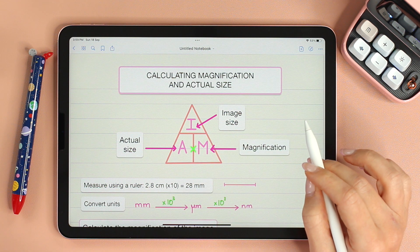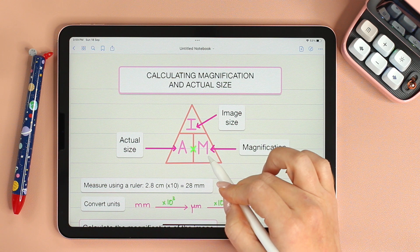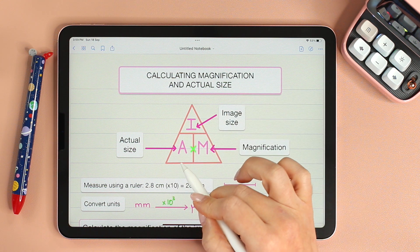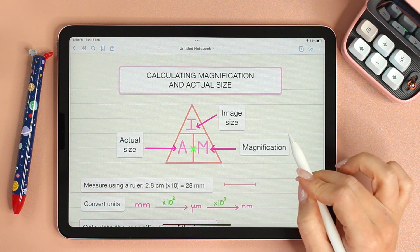All you need to remember is I-A-M. Just place I-A-M in a triangle and you can solve for any variable.